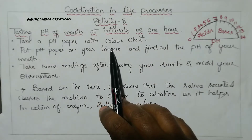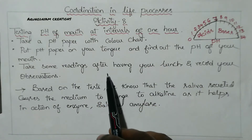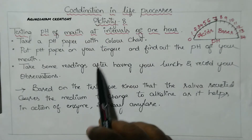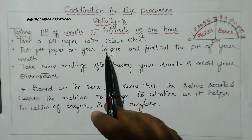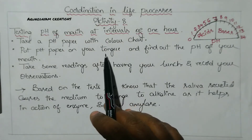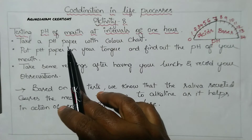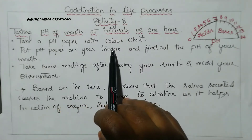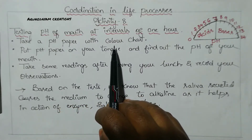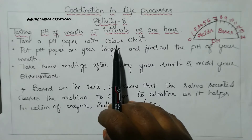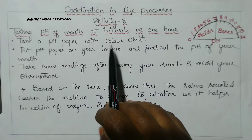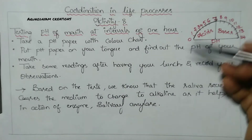So now we are going to test our mouth's pH level. Ask your chemistry teacher to take a pH paper — we have pH papers to test it. Along with that, you have to take a color chart also, which will be in the textbook.